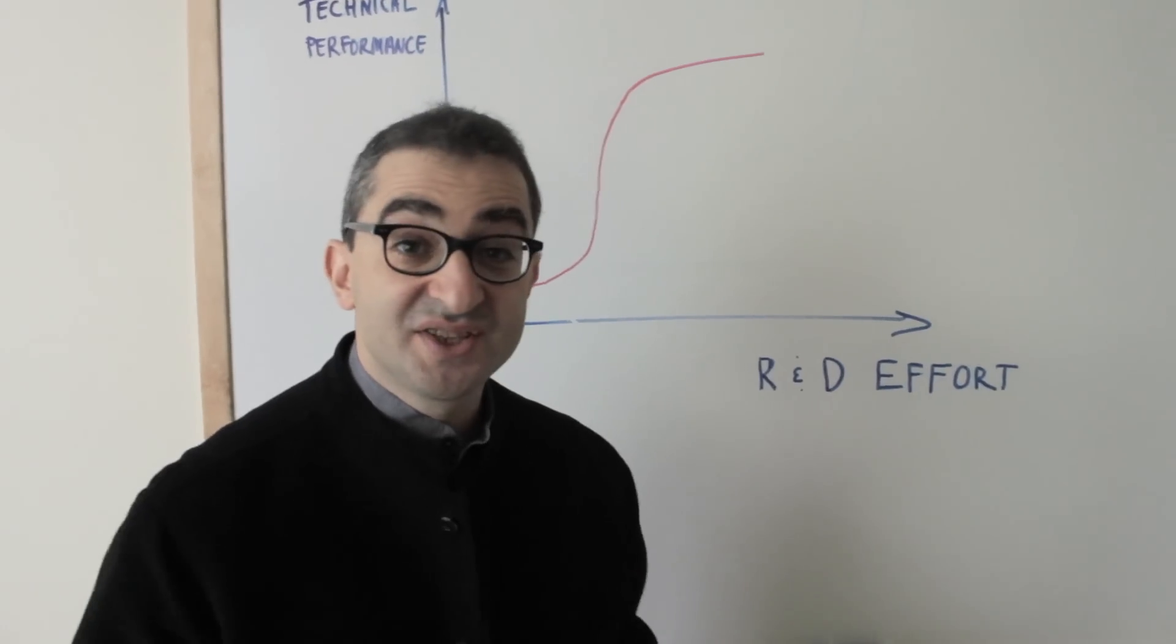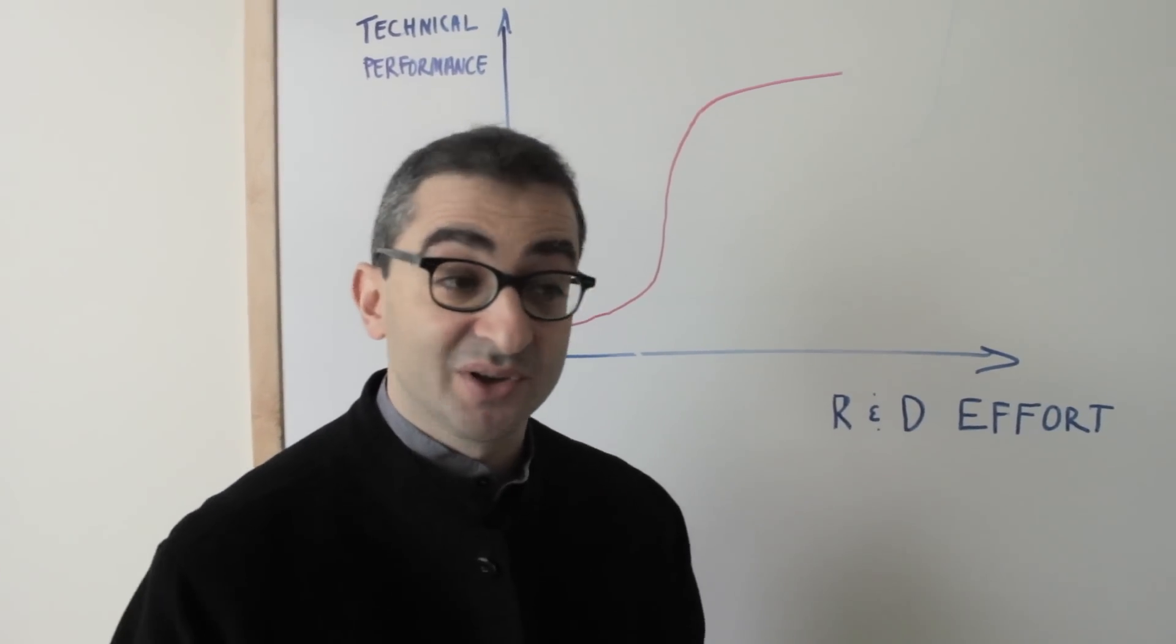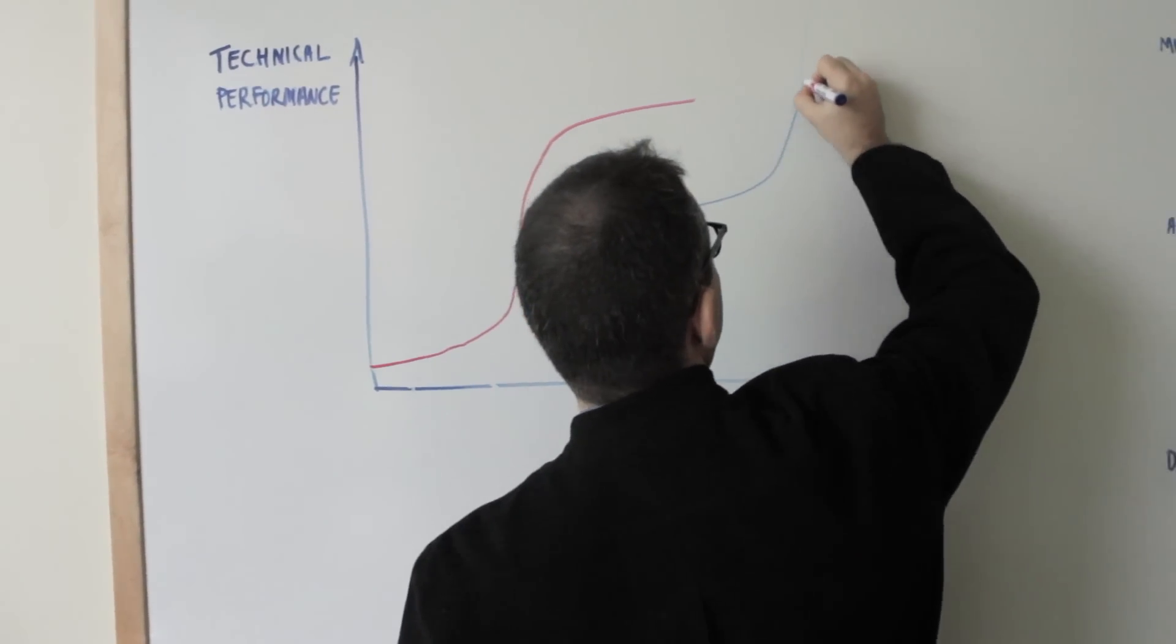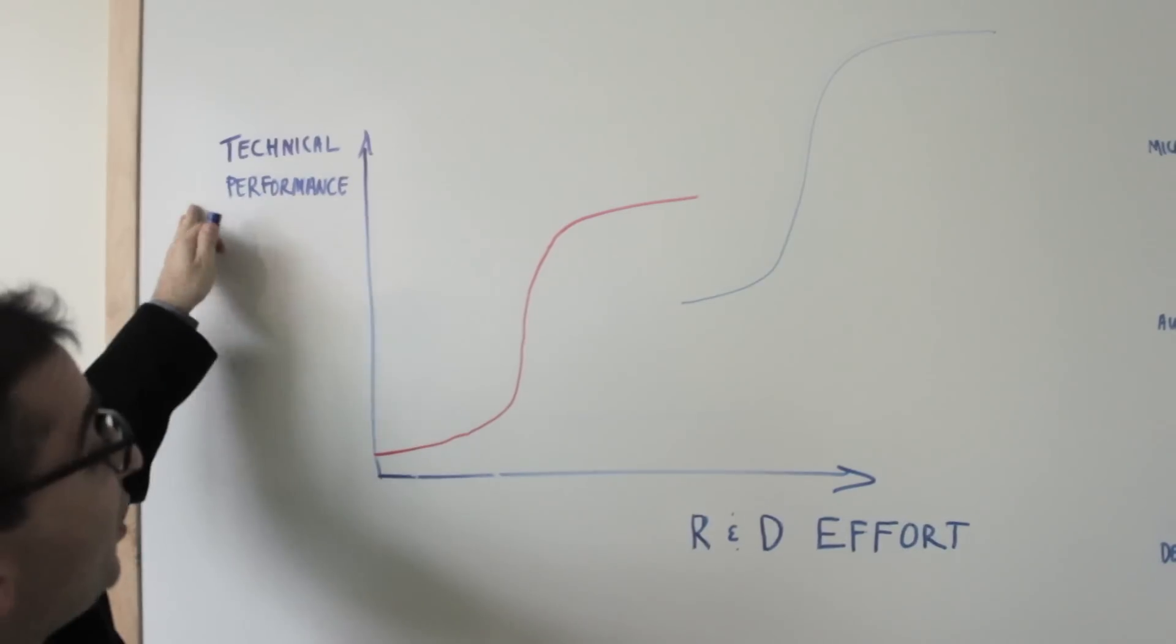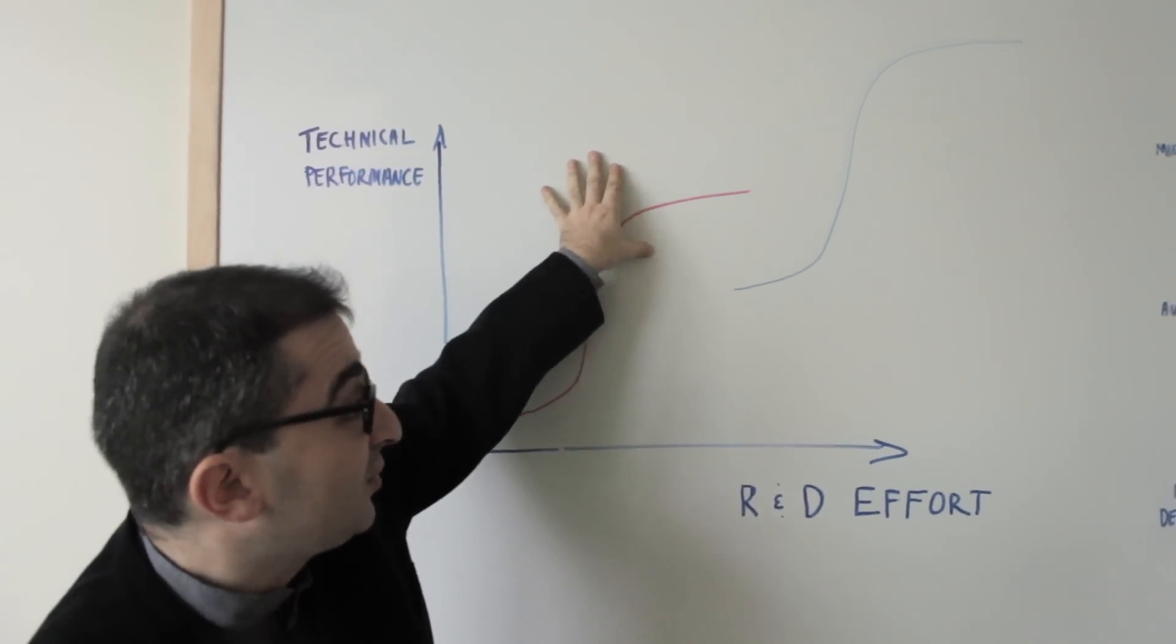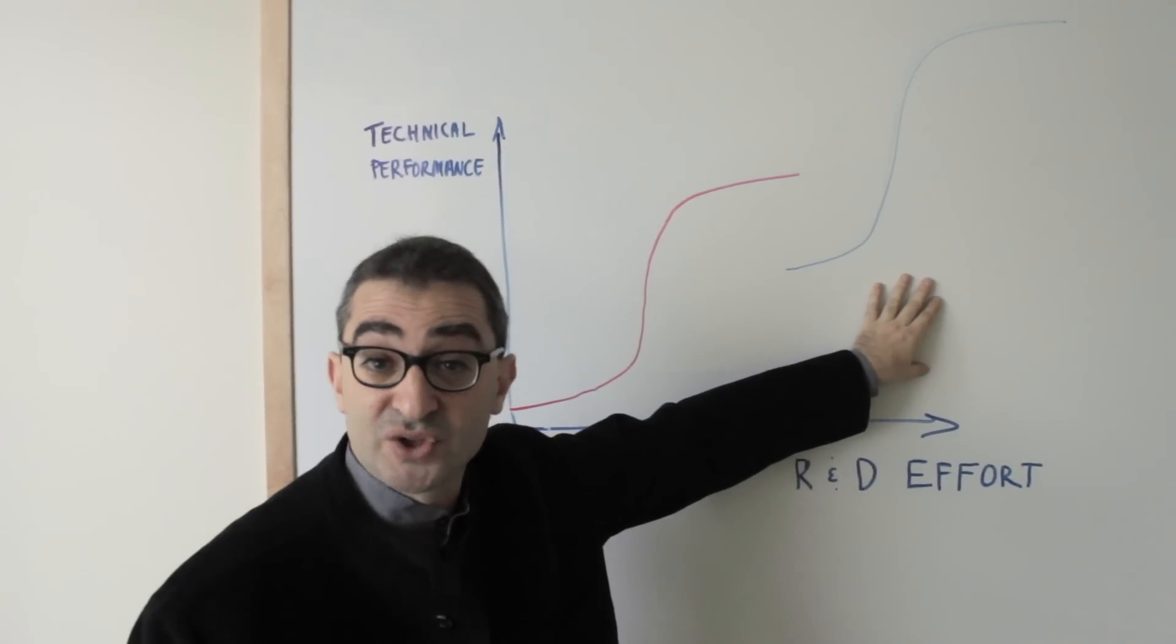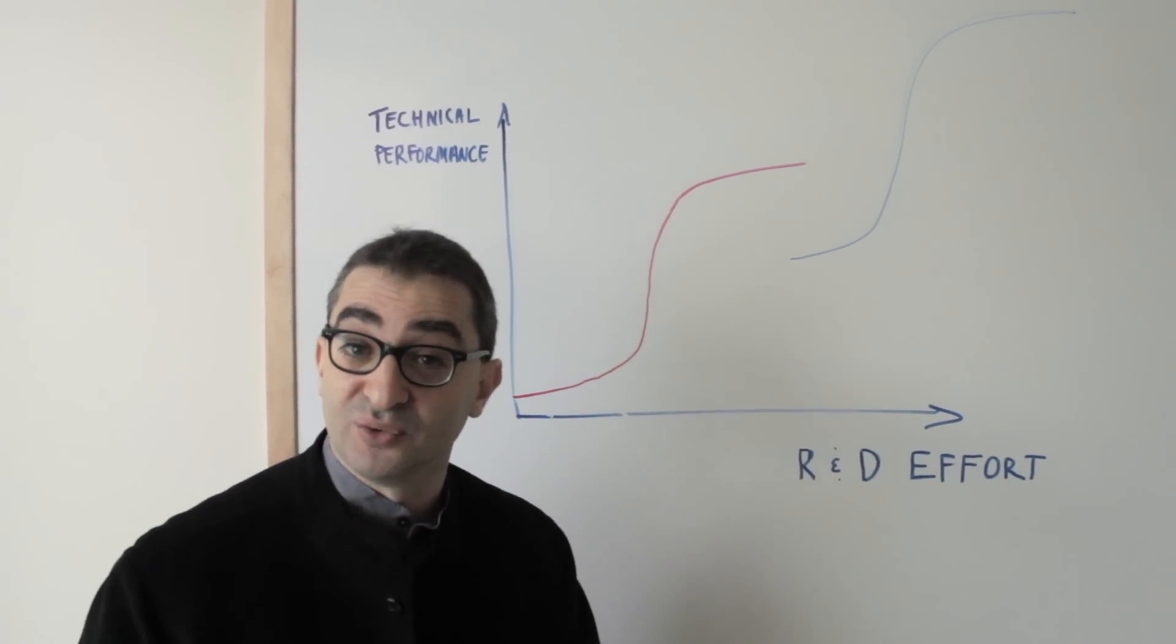So what does this mean for managers? Well, sometimes a new disruptive technology comes along, and there's a discontinuity, a new S-curve, with maybe a new metric of performance. And it turns out that this transition from the old S-curve to the new S-curve is extremely challenging for established firms to execute. Kodak, for example, couldn't do it in the case of digital photography.